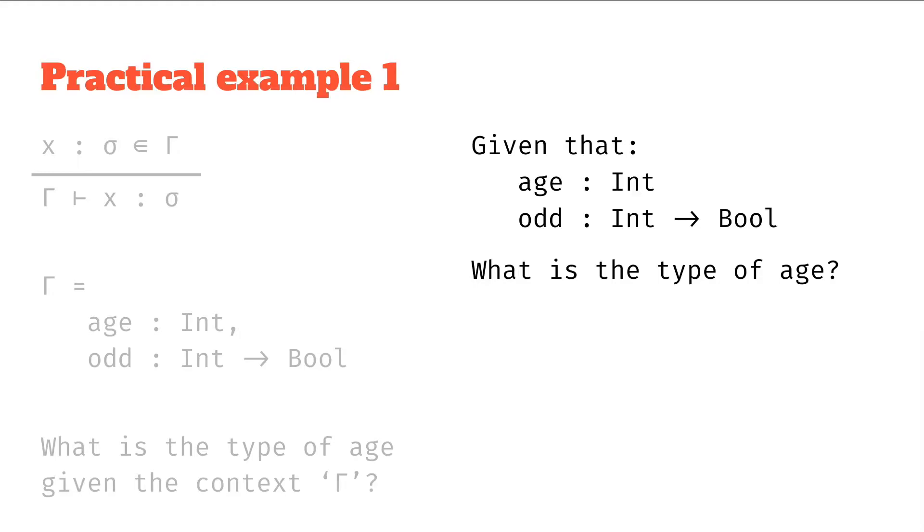We can translate this into symbols if we said, from the context, it follows that age is what type, some question marks in the type where we're expecting.